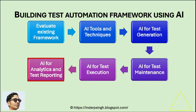Step six: Analytics and test reporting. AI automation can analyze test results to detect patterns and provide insights. Generative AI in QA automation can generate charts based on analytics to help testers focus their testing on problem areas.